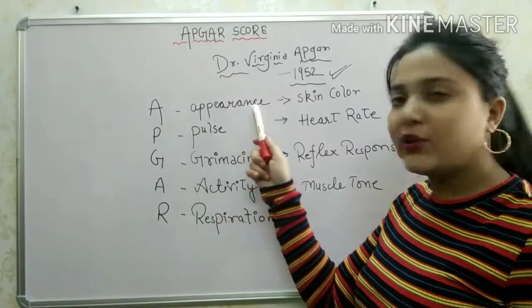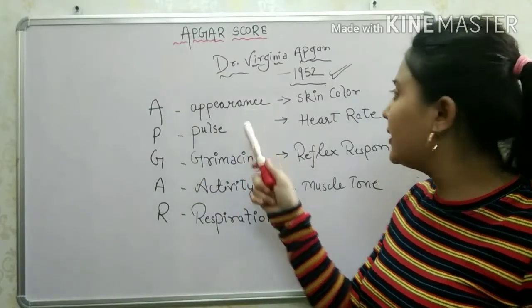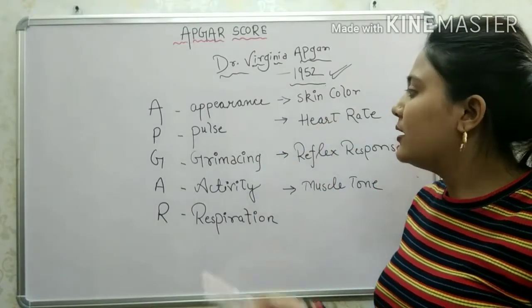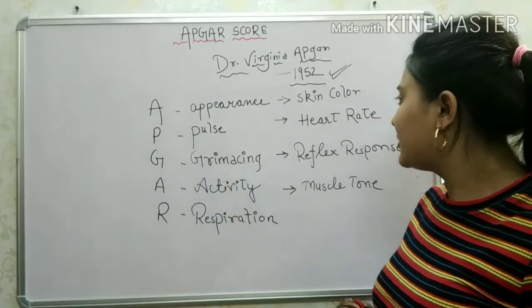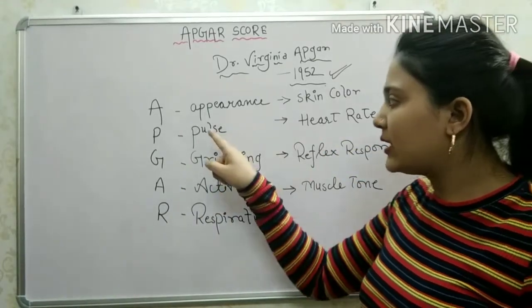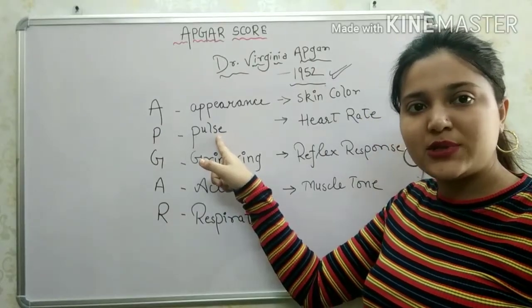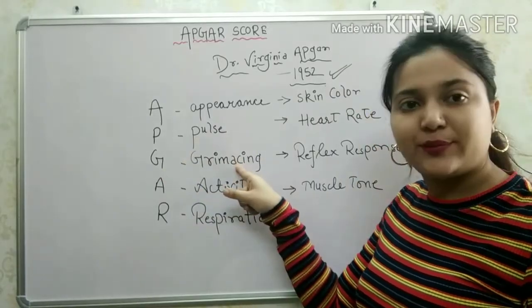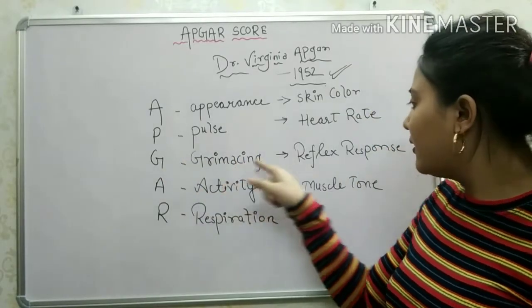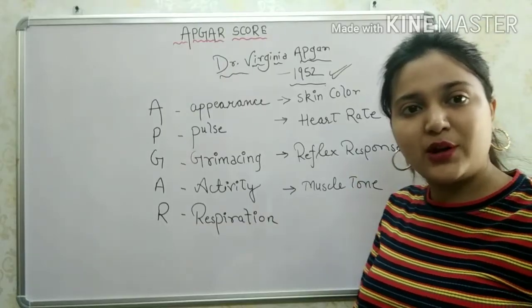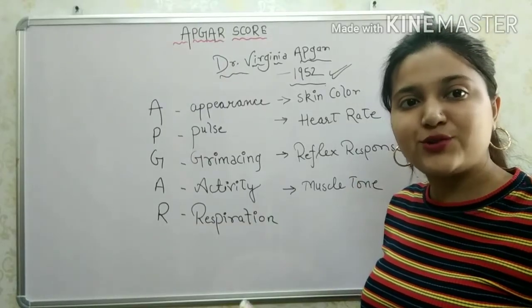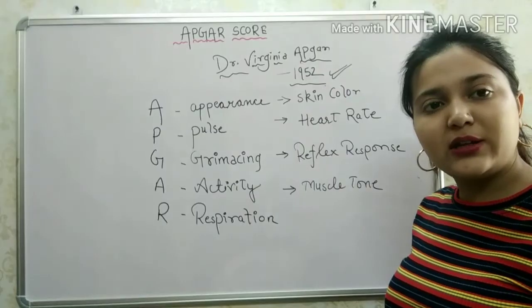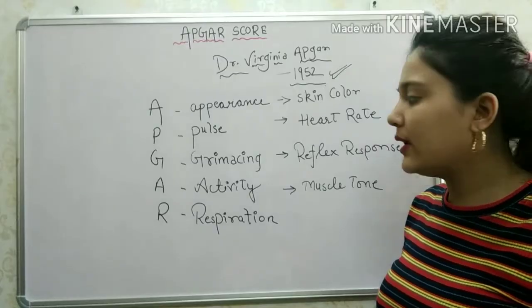The GAR score criteria include: cardiovascular system check, posture, activity, and reflex response. For activity, we assess muscle tone.